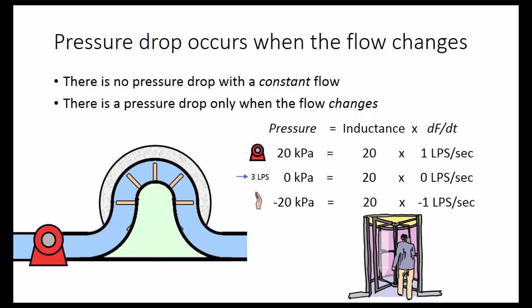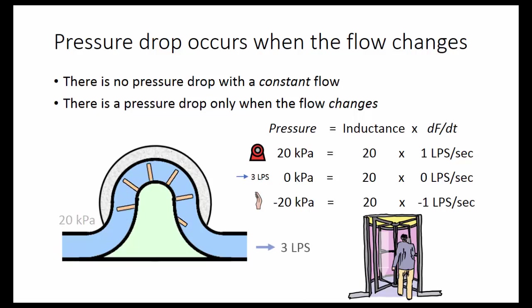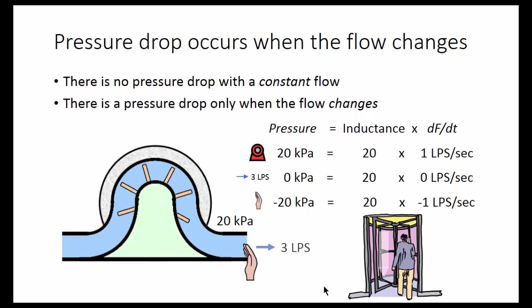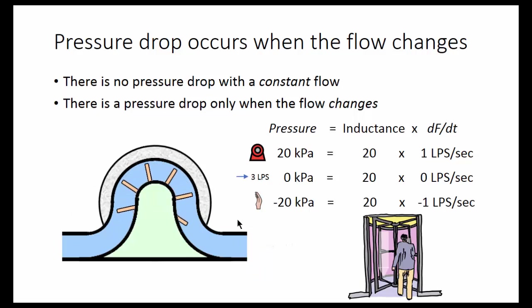Let's watch it again. Turn on the pump — one, two, three — three liters per second. No pressure difference on the two sides and a constant flow rate. And now a negative pressure drop and the flow rate decreased at 1 liter per second per second.